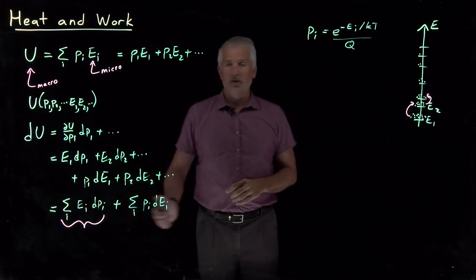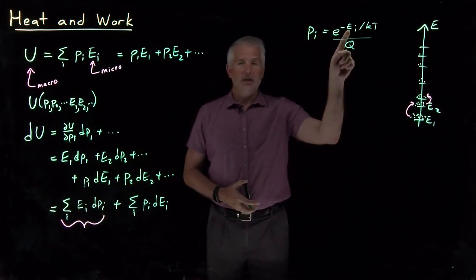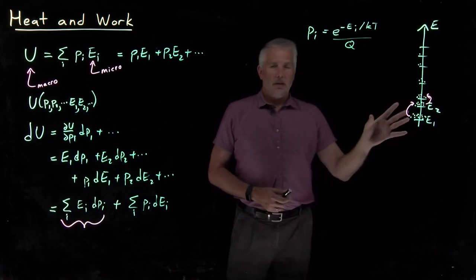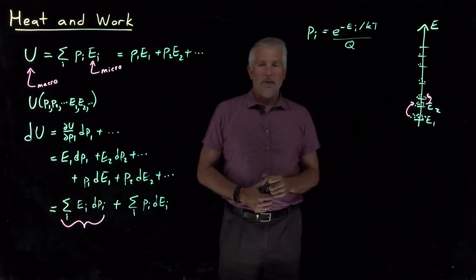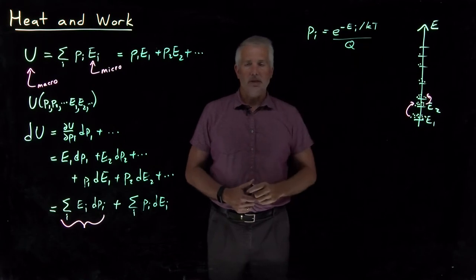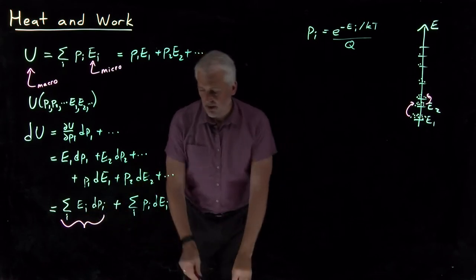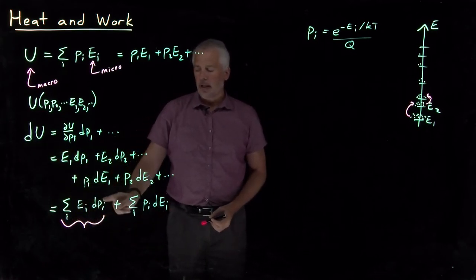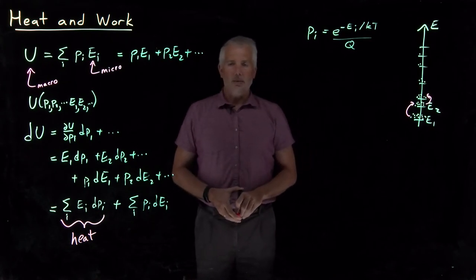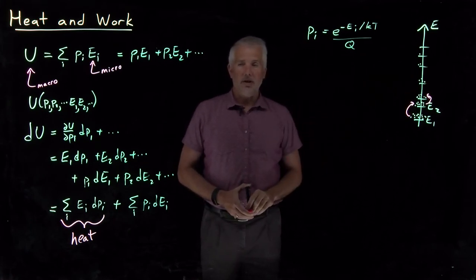If I'm not changing the energy levels, then the only way to change the probability is by affecting the temperature. That makes sense: if I have a set of molecules and I heat them up — increase their temperature, apply some heat to the system — that will excite some of the molecules up into higher energy levels, just like Boltzmann says it should, and that is a way of increasing the overall energy of the system. So any change in the internal energy that comes from exciting molecules up to higher energy levels — we call that a change resulting from heat. When we apply energy to the system in a form that causes molecules to occupy higher energy levels, that's called heat.